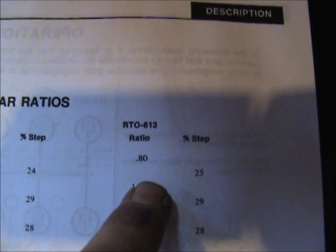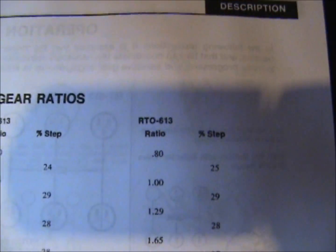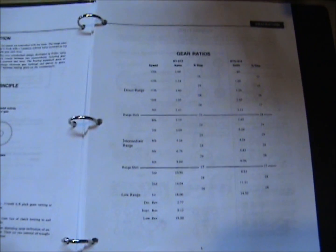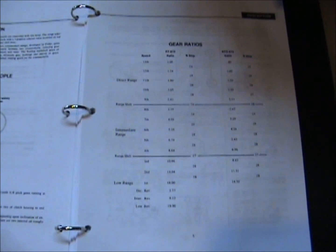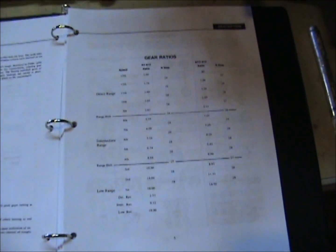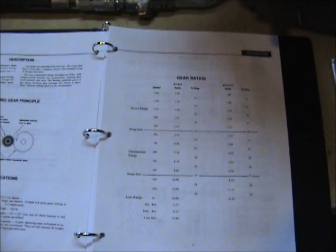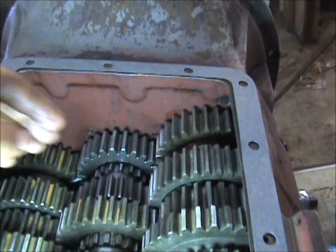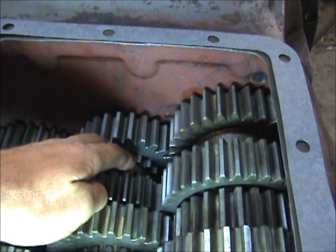But where your top gear is one to one on the 613, on the RTO 613 it's 0.80 overdrive. So it effectively lowers my rear end ratio from a 5.38 to a 4.33. Even if you don't use the overdrive loaded, you can use it unloaded because direct is still going to be in the same position on the shifter.